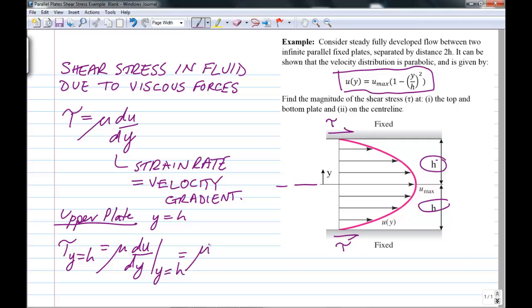So it's going to be mu and then the derivative of our velocity distribution here, the first term is a constant. And then we're going to have u max times minus 2y upon h squared, right, because h is a constant. And we're going to evaluate that at y equals h.